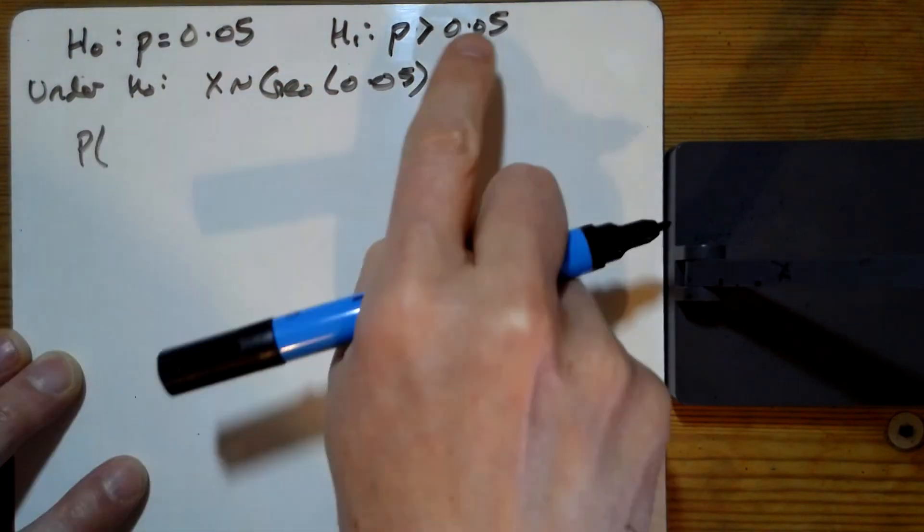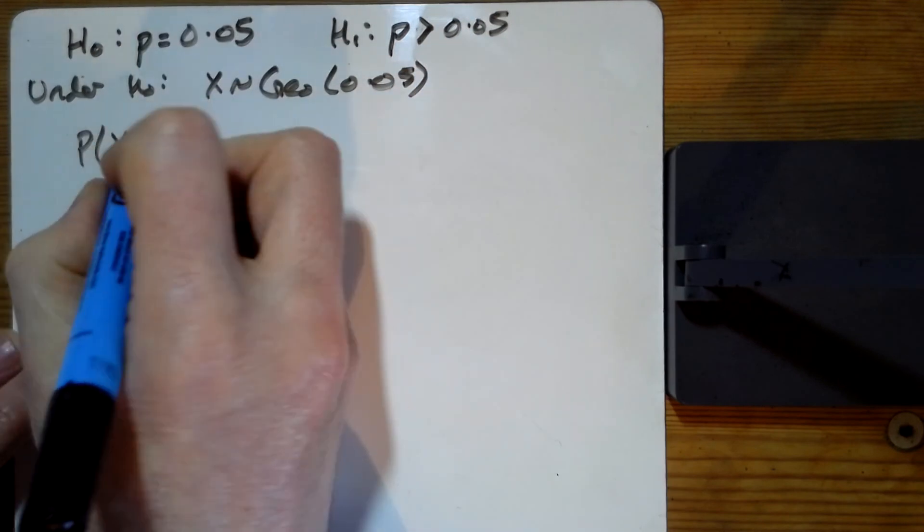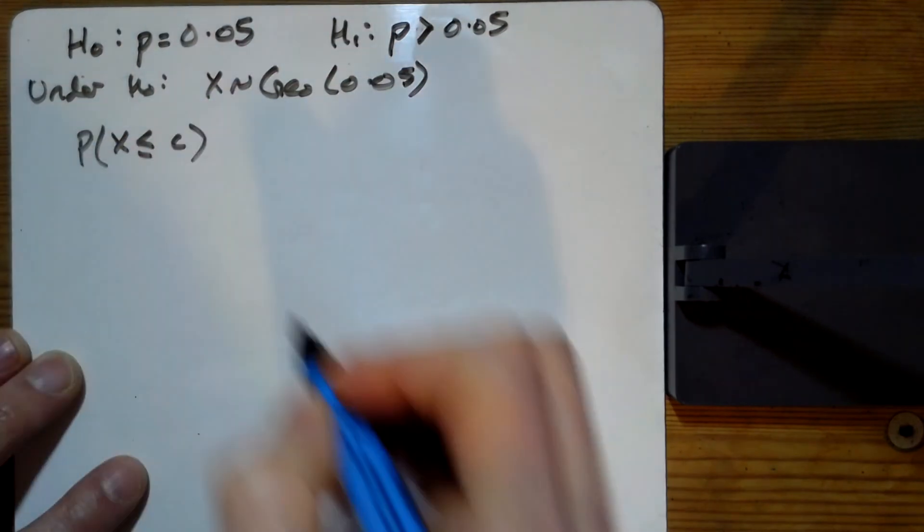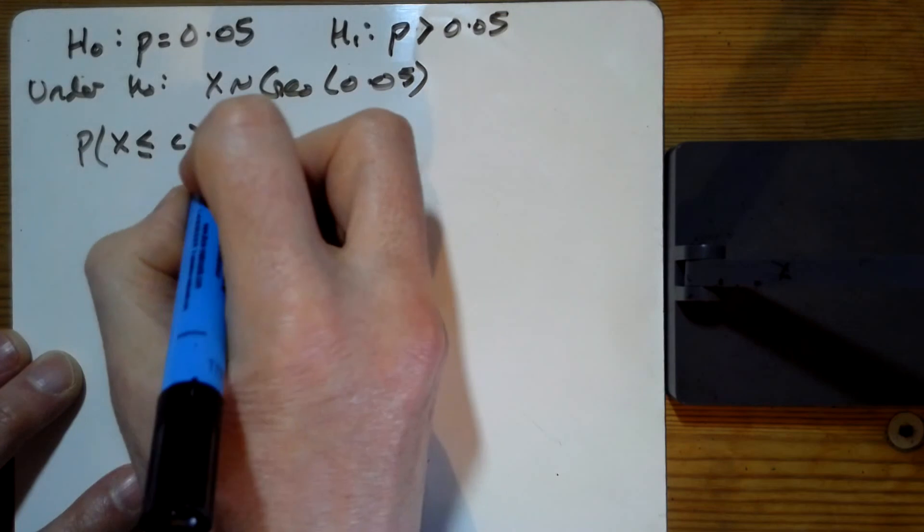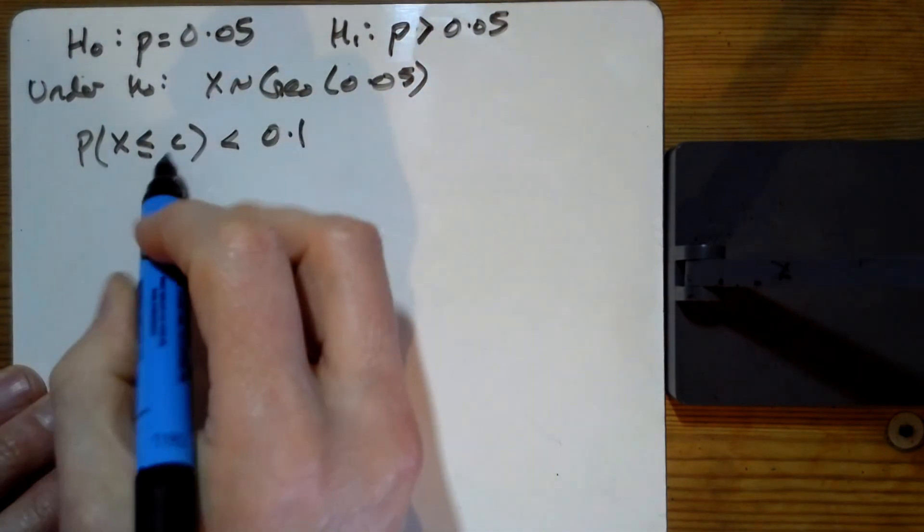But look, if it was going to be better than 0.05, you would use fewer, fewer goes until you got your first success. This is a 10% test here. So this is what we're looking for. The number when it's less than this is lower than 10%.